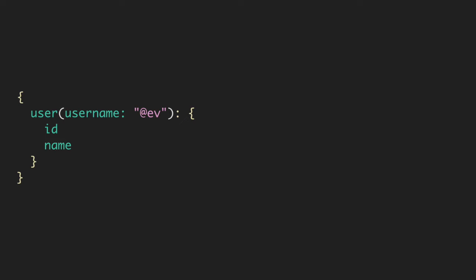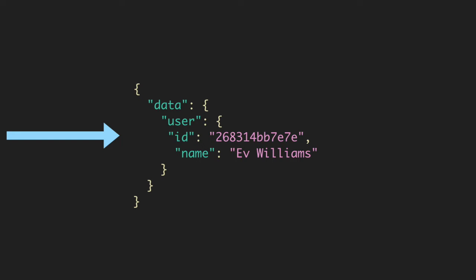Let's start how we would any good talk about GraphQL — with a GraphQL query. So let's make a query for a user and let's pass in a username. It's Ev. I'm pretty sure this user exists. And we'll ask for an ID and a name. And then we'll get something back that looks something like this. So we have our data, we have a user, and we ask for an ID and a name — we have the ID and the name. Ev will use. Awesome.